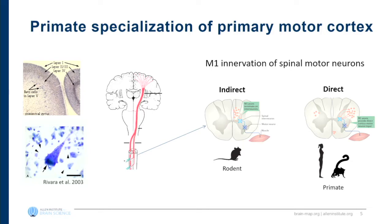In motor cortex, many years of work have already shown specializations between primate and rodent. One striking feature is these very large cells in deep layer 5, known as gigantopyramidal neurons or Betz cells. They have very large soma — 80 to 100 micron diameter — and compose part of the corticospinal tract, synapsing on either inhibitory interneurons or lower motor neurons. A larger percentage of these neurons in primates synapse directly on lower motor neurons, whereas they tend to project to interneurons in rodents, underlying differences in motor control such as fine hand movement.